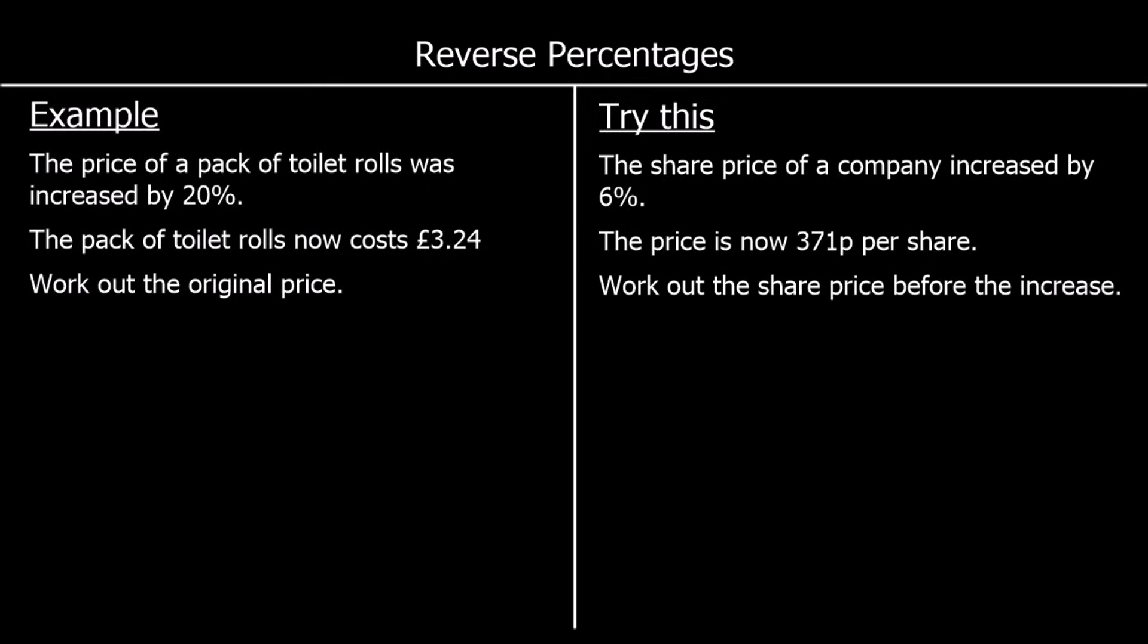So let's look at what we can do. Let's call the original 100%. And we increased by 20%, so we added on 20%. That gives us 120%. So we can say that £3.24 is 120% of the original. And we can actually write this as an equation. We can say the original times 120%, or 120% as a decimal, which is 1.2, is equal to £3.24.